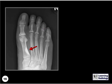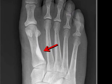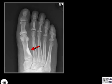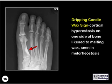What sign is demonstrated here? The dripping candle wax sign, which is cortical hyperostosis, usually on one side of the bone, which was likened to melting wax, seen in melorheostosis.